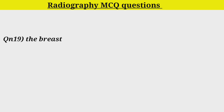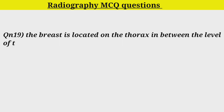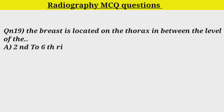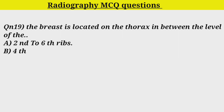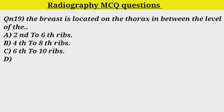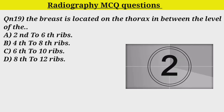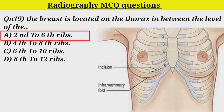Q19. The breast is located on the thorax in between the level of: Option A. 2nd to 6th ribs. Option B. 4 to 8 ribs. Option C. 6 to 10 ribs. Option D. 8 to 12 ribs. Correct answer is Option A. 2nd to 6th ribs.